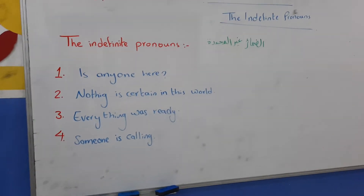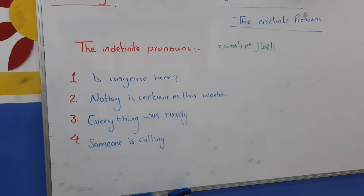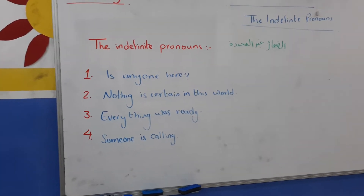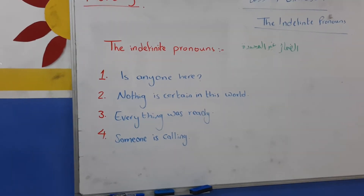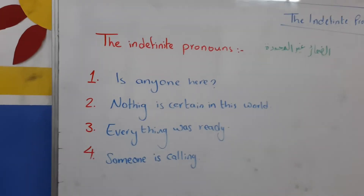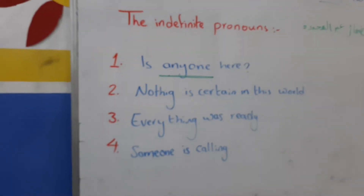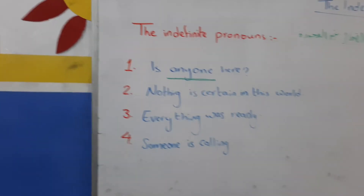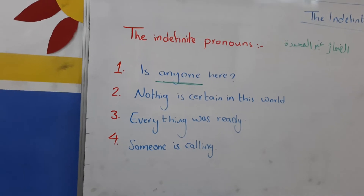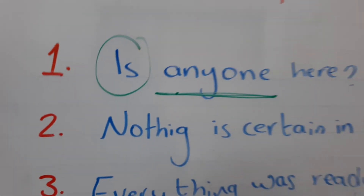Look at these examples. The first one: 'Is anyone here?' The indefinite pronoun is 'anyone'. Look at the verb — 'is'. 'Is' is used with singular pronouns. That's right — 'is' is used with singular pronouns.